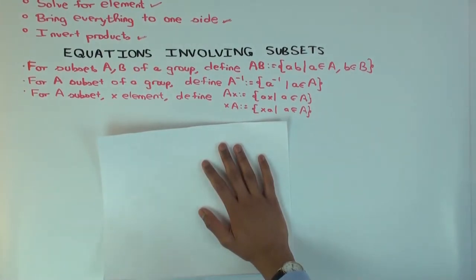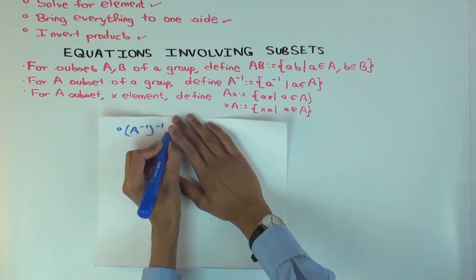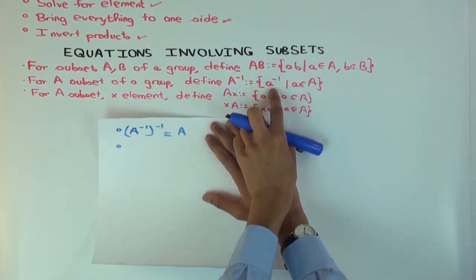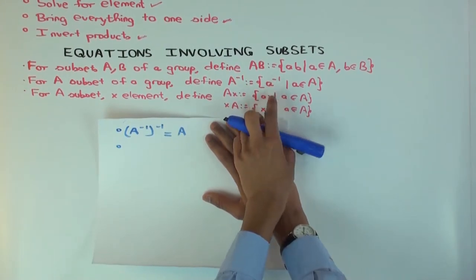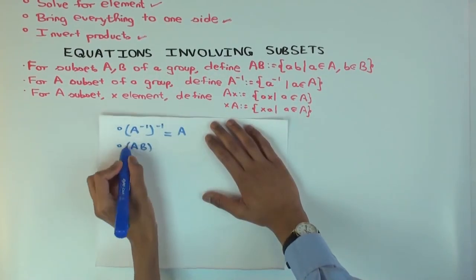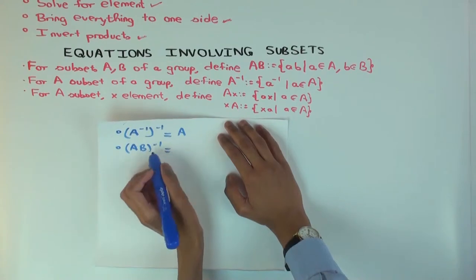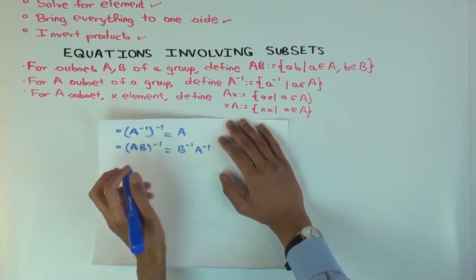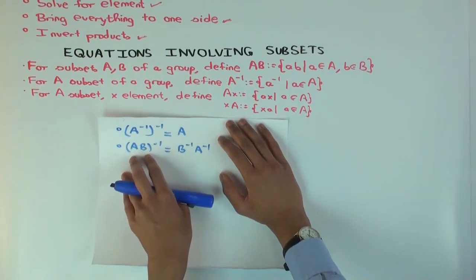So let's first try to see some rules which extend directly from the element world. The first one I want to write is A inverse inverse is what? AB for any subset. And you see that because for every element, it's being sent to its inverse, and then that's being sent to its inverse. AB inverse, if you have two subsets. The inverse of the product is what? B inverse, A inverse. And you could have a similar thing for products of more than two things. But the point is that this follows again from the reversal law for products of elements.